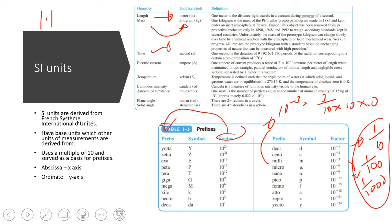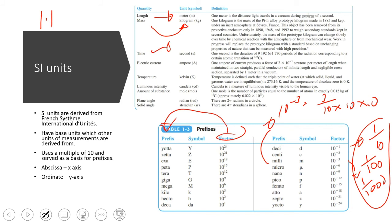SI units. In an SI unit, it's derived from French Système International units. They have a base unit, which is shown here. In every base unit — like the meter, kilogram, second, ampere, Kelvin, candela, mole, radian, and steradian — there's going to be an associated quantity with it.